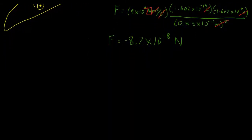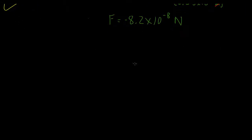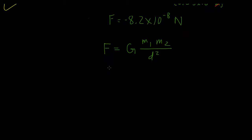Now we need to compare this force with the gravitational force. The gravitational formula is very similar to Coulomb's law. Here we use G, Newton's gravitational constant, times the mass of the first object times the mass of the second, divided by the distance between them squared. G is 6.67 times 10 to the negative 11th newton meters squared per kilogram squared.